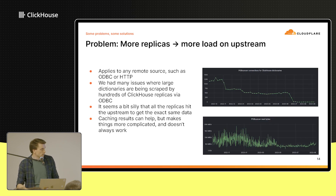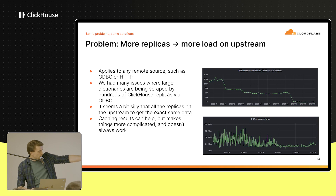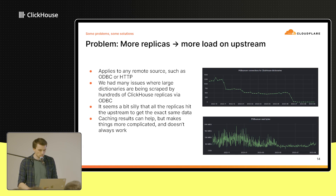Sometimes that upstream system can struggle because of ClickHouse itself. We have a thousand replicas, and several hundred of them might load the same dictionary, all going to the same source and issuing the same lookups to get the exact same data. About a year ago we were having quite a few conversations with our Postgres team, who were not happy — we had over a thousand connections to Postgres open all the time and a huge amount of egress bandwidth. It is very silly to have all these replicas connecting to the same external system, running the exact same query, fully expecting the exact same result. Caching is possible but is case-by-case and takes significant engineering time.